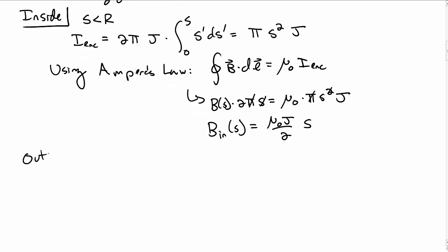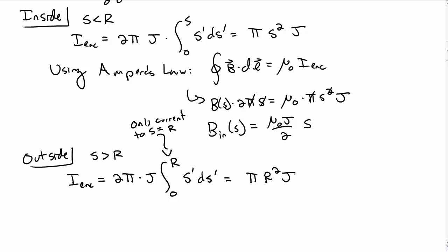Outside the wire for s greater than r, we compute i enclosed again. The phi integral gives 2π, j is constant, and the s integral goes from 0 to r because we only have current out to s equals r. This integral gives π r² j. Notice there's no s dependence in this.